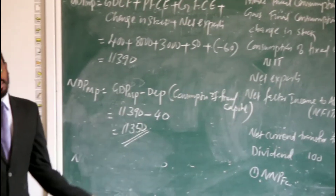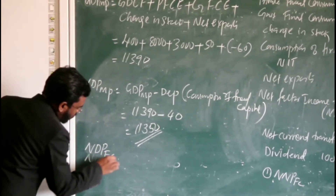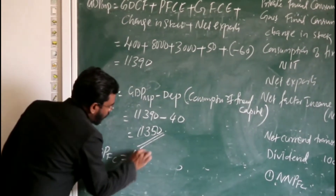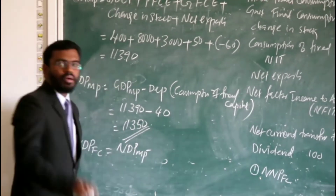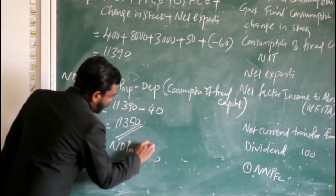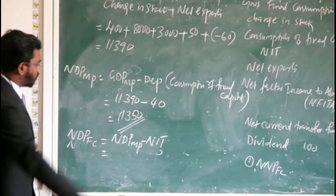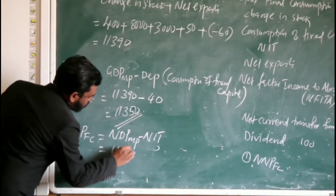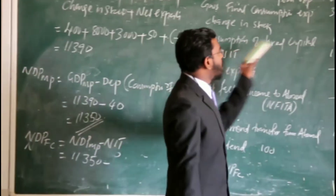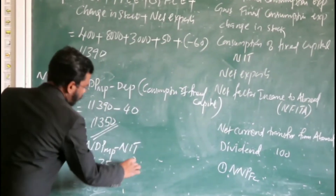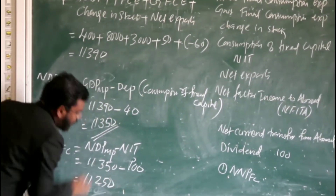If we get NDPMP, then we can easily calculate NDPFC. So NDPFC equals NDPMP minus NIT. That is equal to 11,350 minus NIT, which is 100. That is equal to 11,250.